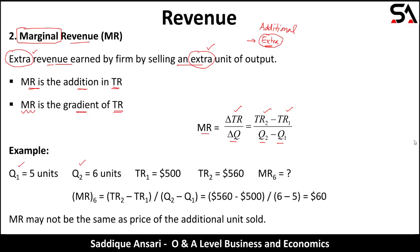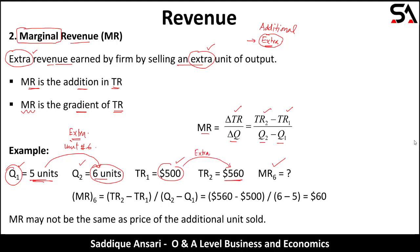For example, if quantity goes from 5 units to 6 units, unit number six is the extra unit. The total revenue earned by selling five units (Q1) is $500, and the total revenue earned by selling six units together is $560. The addition in total revenue is $60, calculated as (560 − 500) / (6 − 5) = $60, which is marginal revenue for unit number six.